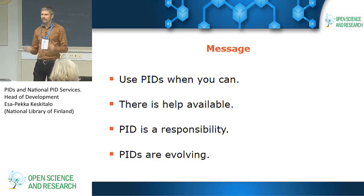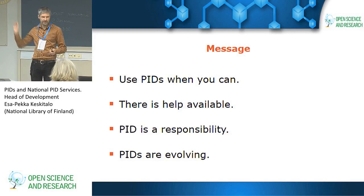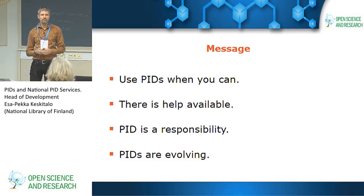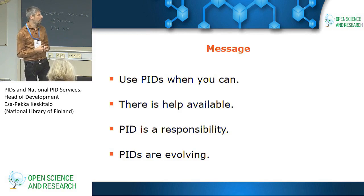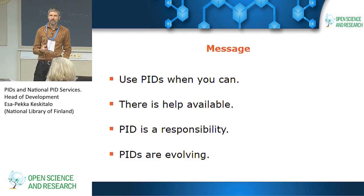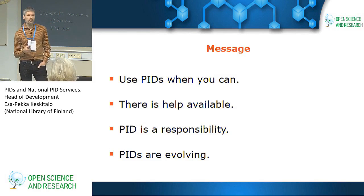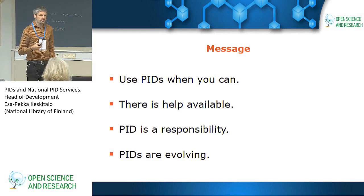It all looked very grand and sophisticated, but I have to say that the persistent identifiers really are a very easy thing. They are just strings of characters, so you should not be intimidated with them, but embrace them and use them where you can. That was the advice of the last presenter before me, and it's my advice: use persistent identifiers where you can. And there is help available, and we are very interested at the National Library to hear what kinds of needs research groups and research organisations have regarding PIDs.